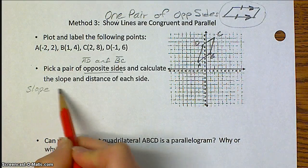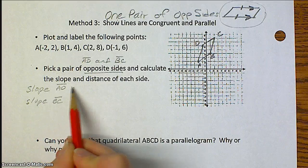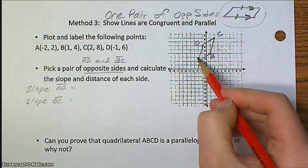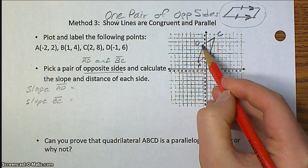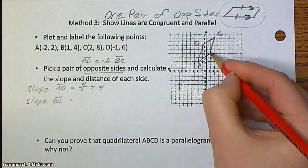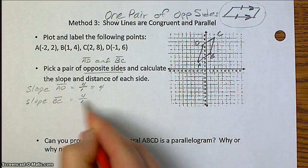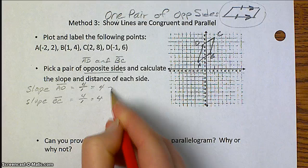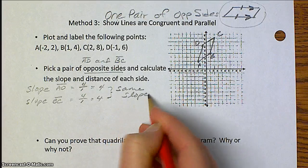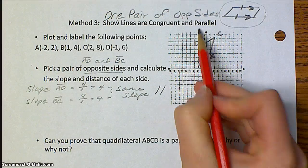And then we're going to find the slope of both of these. So either you can count it: 1, 2, 3, 4 up, and 1 to the right, which is just 4. And BC is also 1, 2, 3, 4 up, 1 to the right, which is also 4. So same slope means that those lines must be parallel. So so far we've proved that they're parallel.